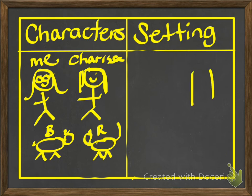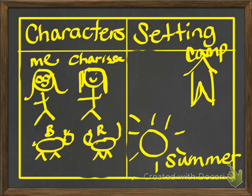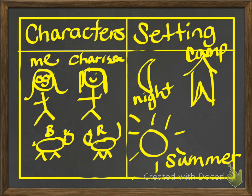For the setting, I'm gonna draw a tent to show that I was camping. So it was at the campground — I'm gonna label that. And it was in the summer, so I'm gonna put a sun for summer and write 'summer.' And also it was overnight, so I'm gonna draw a moon and write 'night,' because it was nighttime. It was nighttime during the summer, and it was at the campgrounds. I just wrote the characters, who was there, and the setting.